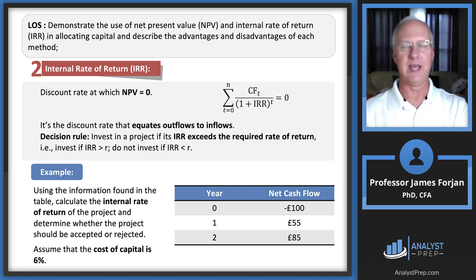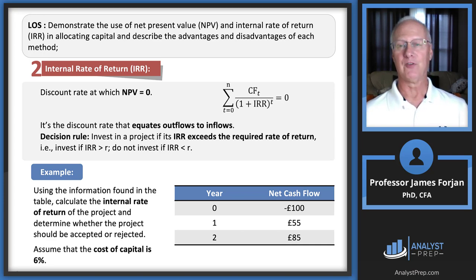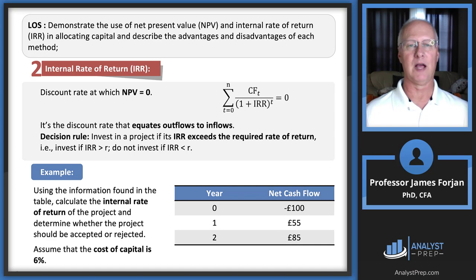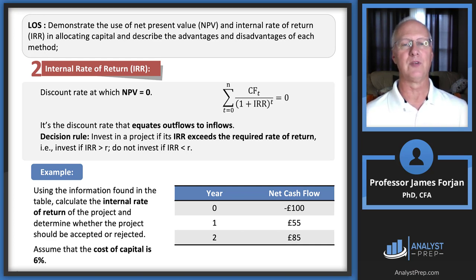Most academics and practitioners conclude: when you use net present value, you always make decisions that maximize the value of the firm. When you use the IRR method, you always make decisions that increase the value of the firm, but not necessarily maximize it. NPV always maximizes; IRR always increases. For standalone projects, NPV and IRR will always lead to the same decision. The disadvantage of using IRR only occurs when projects are mutually exclusive.